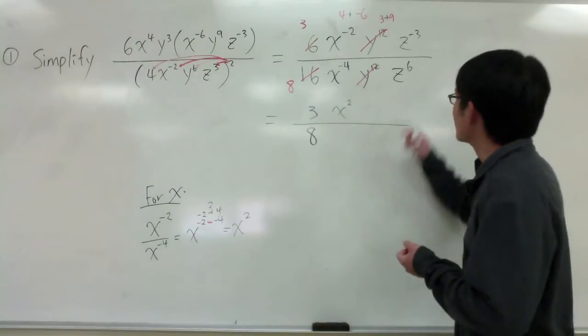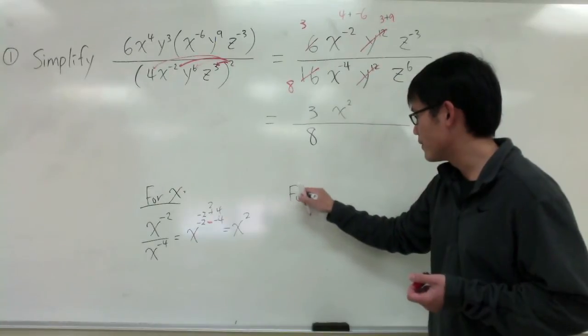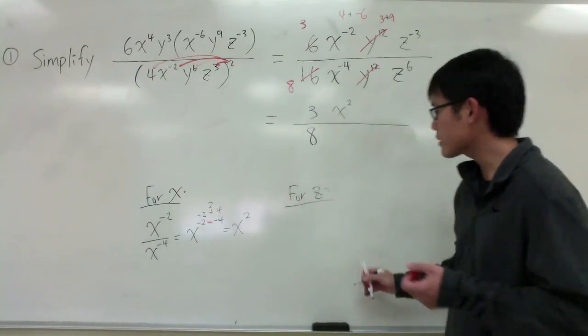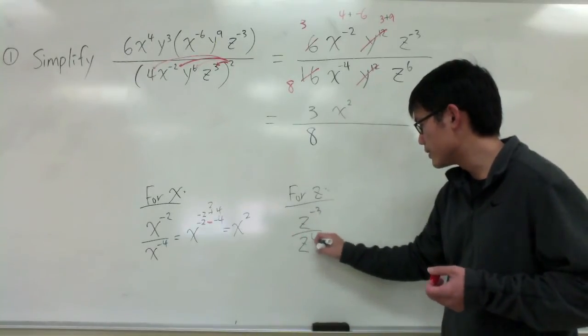And the last part, I have z to the negative 3, z to the 6. So, let me do another one for z right here. I'm looking at this as z to the negative 3 over z to the 6.